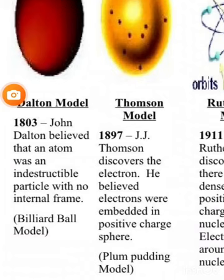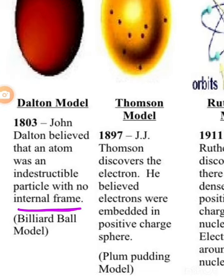Let's look at a brief comparison between Dalton's atomic model and Thomson's model. According to Dalton's atomic model, John Dalton believed that an atom was an indestructible particle with no internal structure. According to Thomson's model, Thomson discovered the electron and believed that electrons are embedded in a positive charge sphere.